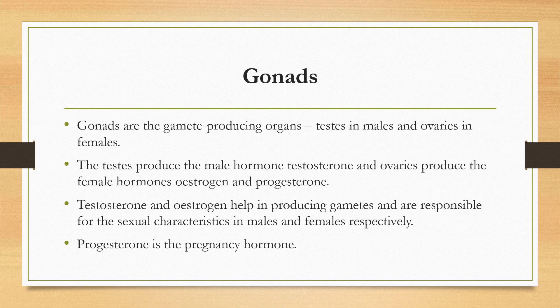Boys attain puberty at the age of 13 to 14 years. Testes also make the gametes called sperm. The function of estrogen is to control the development of female sex organs and female features such as feminine voice, soft skin, and mammary glands — all associated with female puberty, which girls attain at around 10 to 12 years. The function of progesterone is to control uterus changes in the menstrual cycle and help in the maintenance of pregnancy. Ovaries also make the female gametes called ova. The gonads act as both endocrine and exocrine glands.